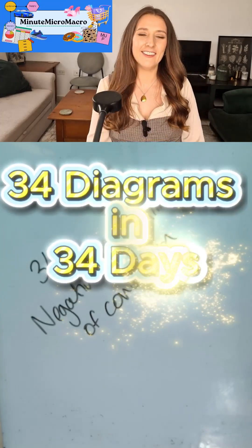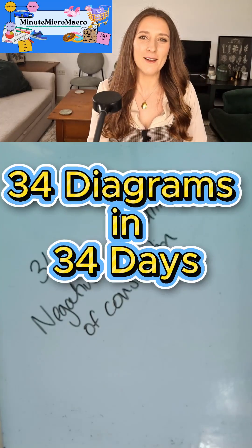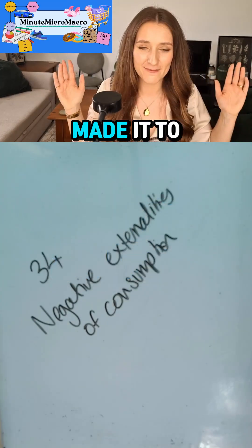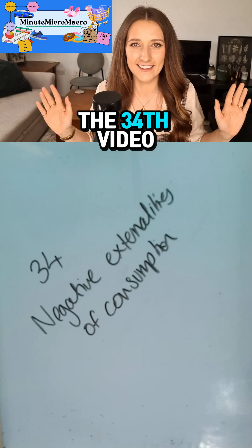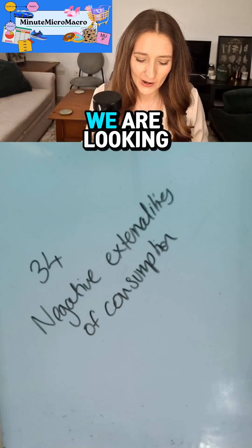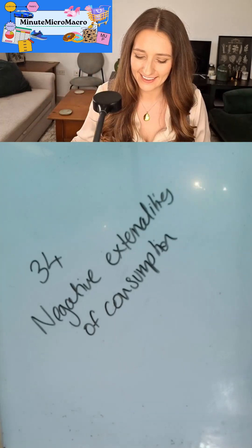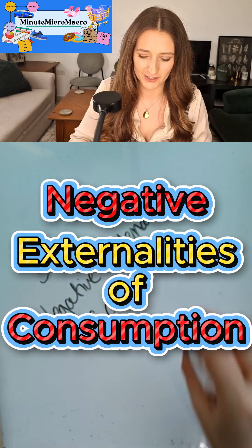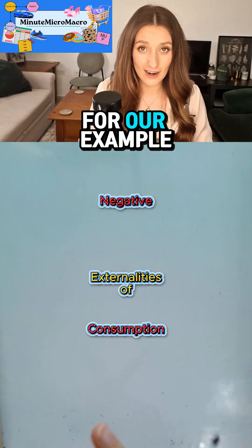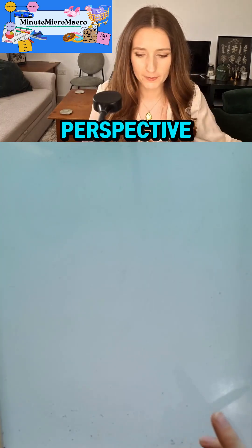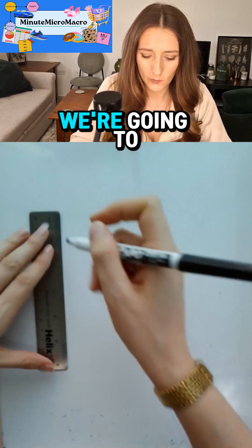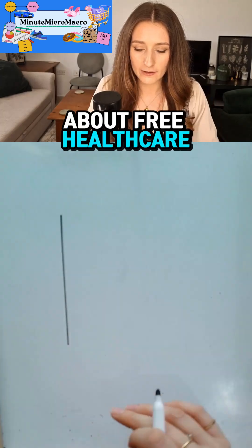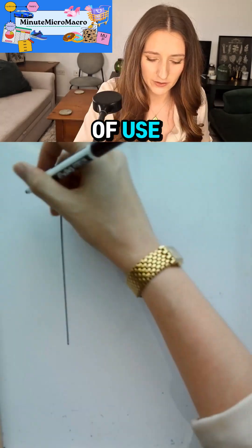Hello and welcome back to 34 diagrams drawn for you in 34 days, and we have made it to the 34th video. We are looking at the negative externalities of consumption. For our example we're going to take a European perspective and think about free healthcare at the point of use.